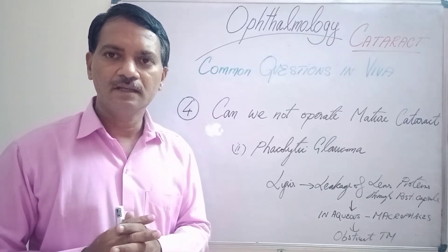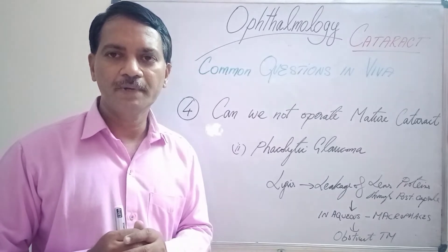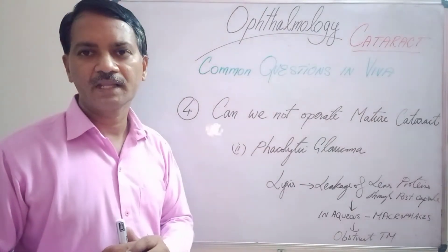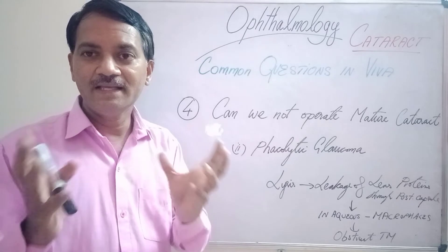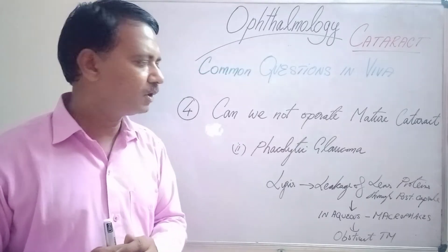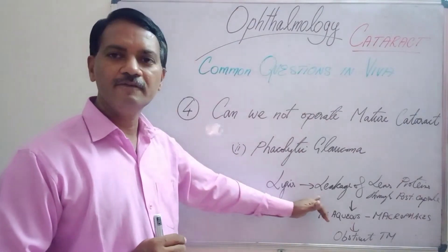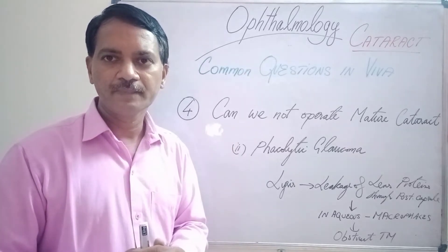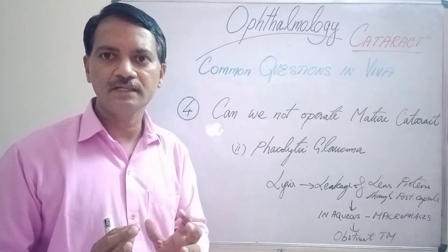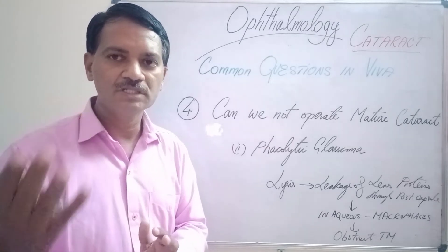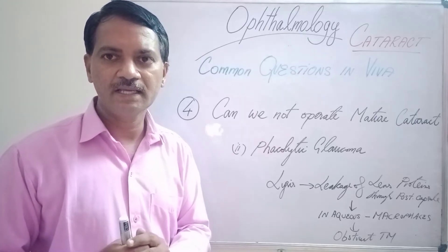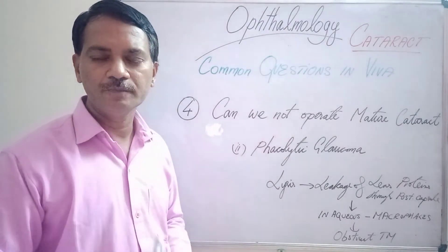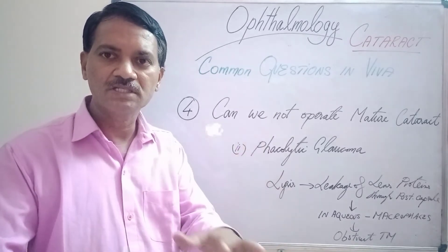Another common complication for a person with mature cataract that is not operated is phacolytic glaucoma. When the mature cataract turns into a hypermature cataract, there will be lysis of the lens matter within the lens. The lens proteins will leak through the weakened posterior capsule and come into the anterior chamber. As you know, the lens is a sequestrated structure inside the body, which the immune system is not aware of — just like sperm cells in the testis. So when the lens proteins come into the anterior chamber, they will be attacked by our own immune system — that is, the macrophages.